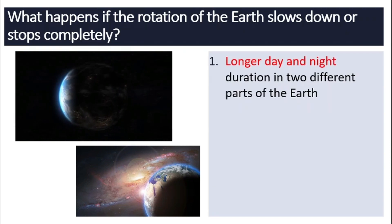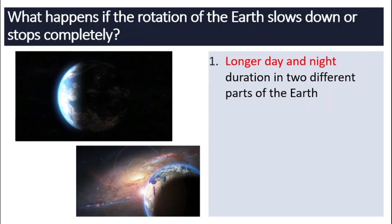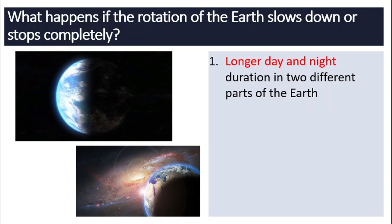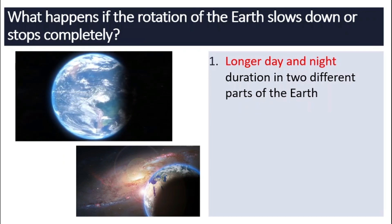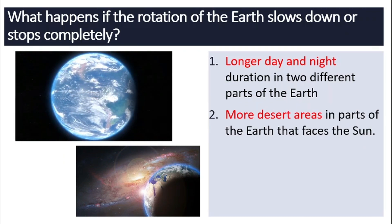Number one, we might have longer day and night because the Earth rotates a lot slower in the two different parts of the Earth. If the Earth completely stopped, then what might happen?